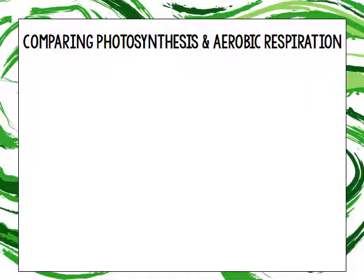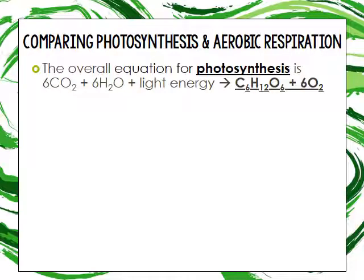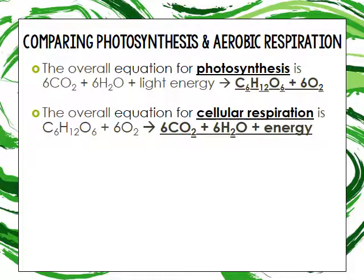Let's compare photosynthesis to aerobic respiration by looking at the chemical formulas. The overall equation for photosynthesis is: 6 CO₂ + 6 H₂O + light energy → C₆H₁₂O₆ + 6 O₂. The overall equation for cellular respiration starts with C₆H₁₂O₆ + 6 O₂ and produces carbon dioxide, water, and ATP.